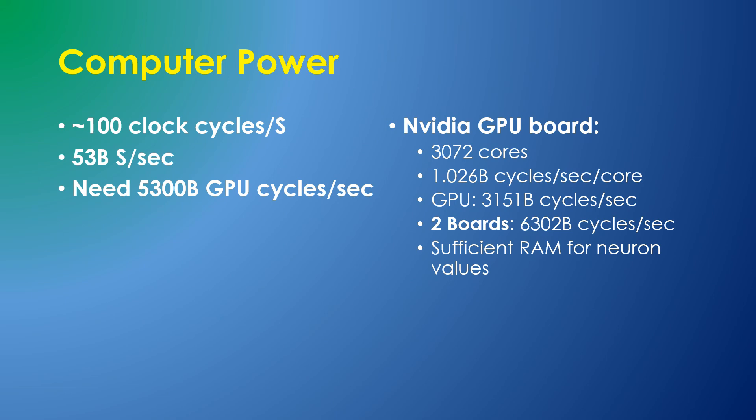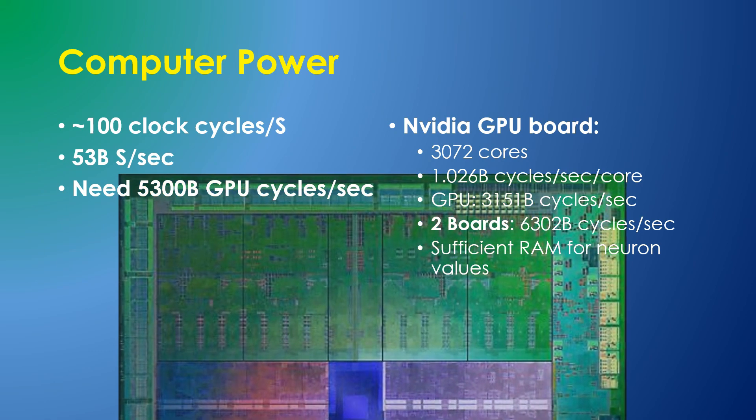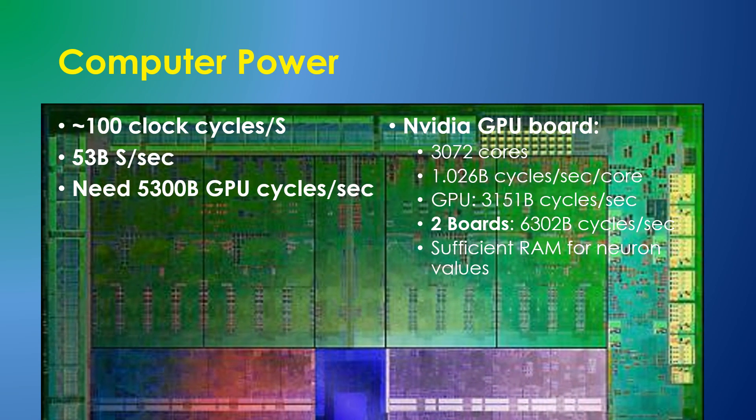I suggest we do this on GPUs, and two of today's Nvidia R6000s have a combined capacity of over 6 trillion cycles per second. More than enough for the 53 billion synapses.